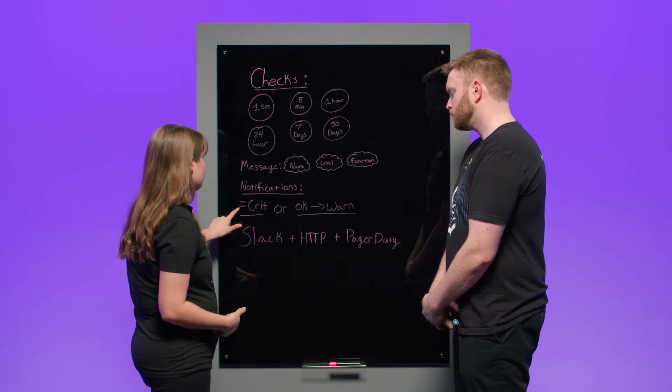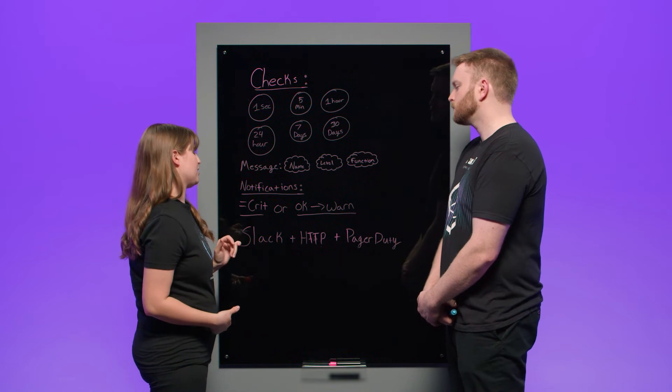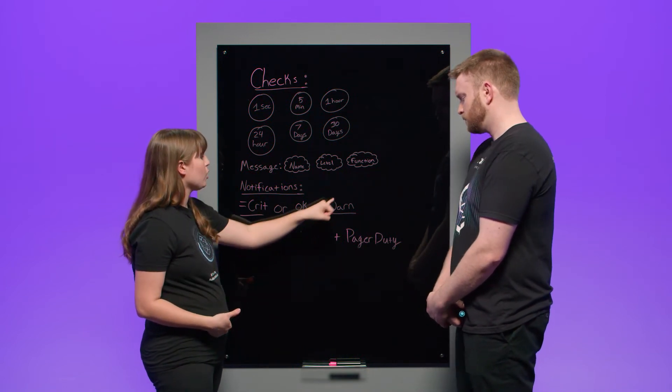Then you have to go on to the notification rules. And the rules are actually what say when the notification will send you something through that endpoint. So for example, you can do it to be when a status is equal to. So when the status is equal to critical, please send me a notification. Or when the status goes from okay to warning, please send me a notification. And those are the two triggers that we have to actually send out an alert to you.